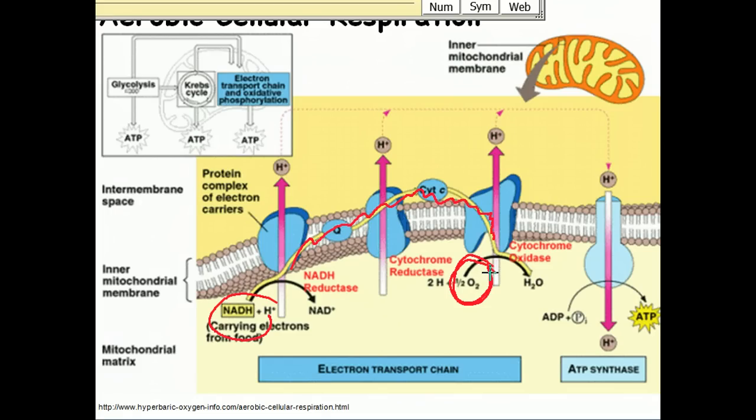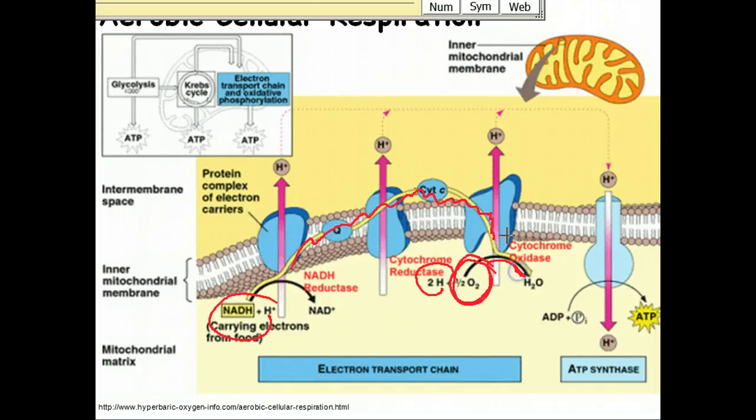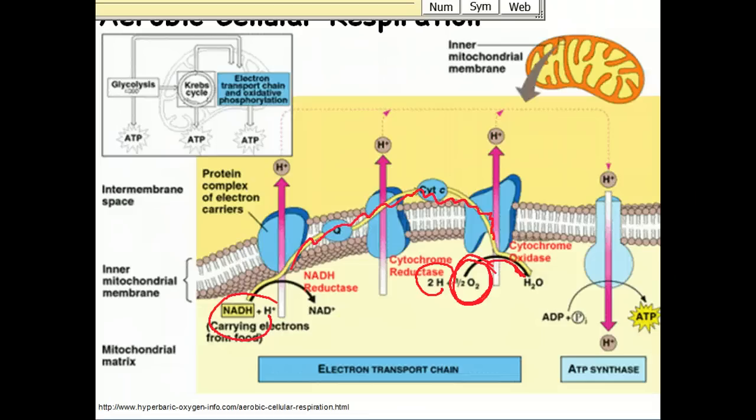This can only occur aerobically. This slide shows that oxygen, as it gains electrons, interacts with hydrogen protons and covalently binds to them to form water. What it's not showing you is that there are actually two intermediate steps needed before the oxygen is completely converted to water molecules.